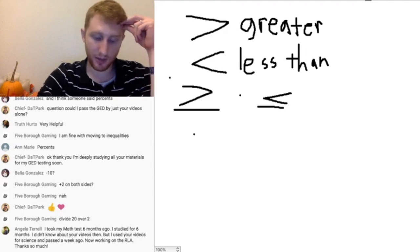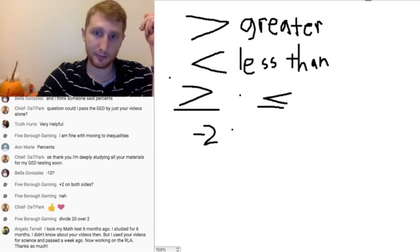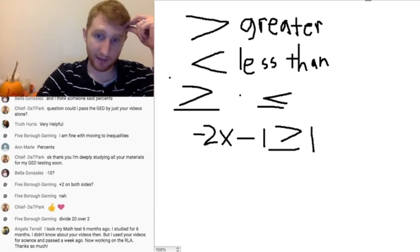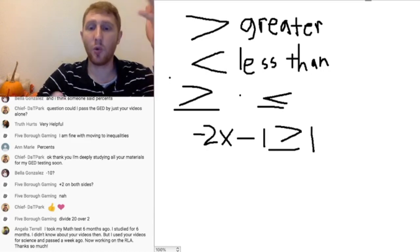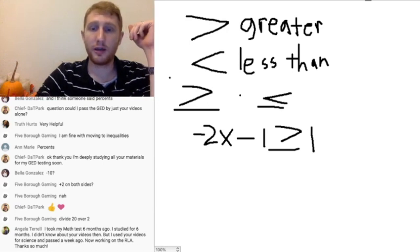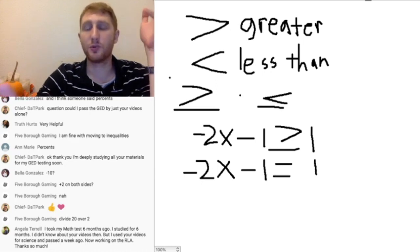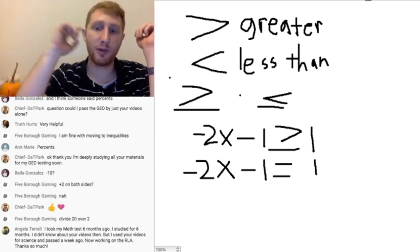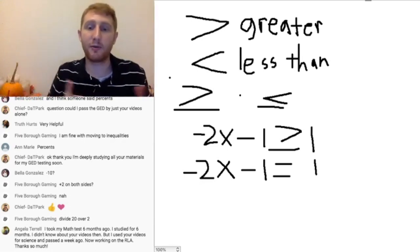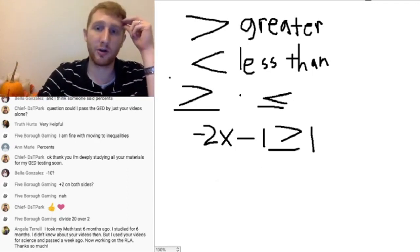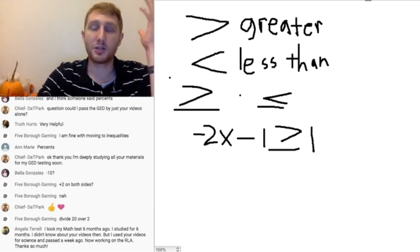Let me show you what I mean. Let's say we have: negative 2x minus 1 is greater than or equal to 1. This can be psychologically intimidating, but when you see this greater than or equal to sign, just think about it like an equal sign. If you look at this problem — negative 2x minus 1 equals 1 — it's the same type of problem we were doing, just a solving equation question. There is a little difference, but at first just treat it the same way. Don't be intimidated by the greater than or equal to sign.